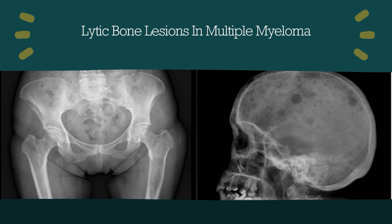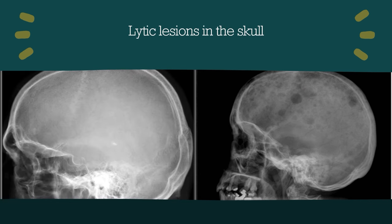The term lytic bone lesion means an area of bone damage that often appears as a hole. You can see two radiographic images here — one of a skull and another of a pelvis. You can notice the bones in the images, and if you look clearly, you can see that these bones have holes in them. This is a normal skull — you can see how smooth the surface looks on an X-ray — whereas here is a skull with lytic lesions, and you can clearly see the holes in them.